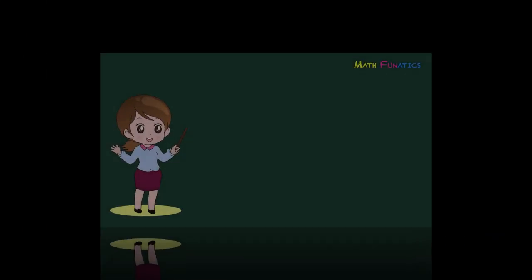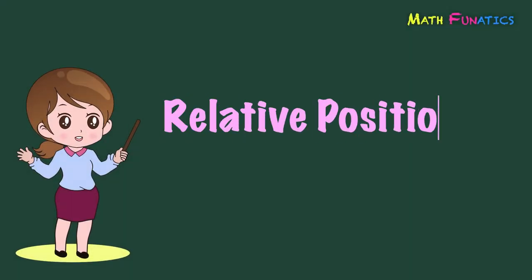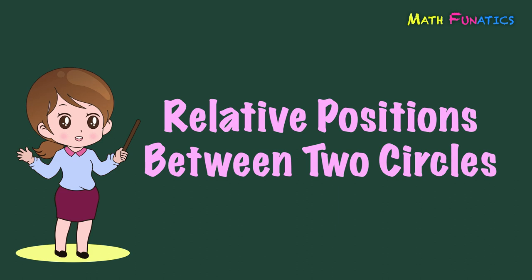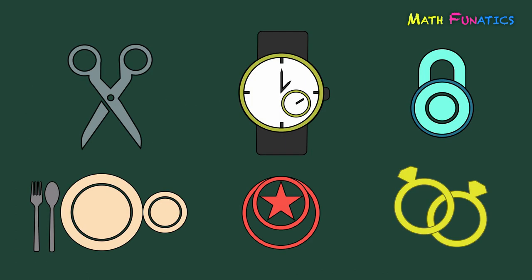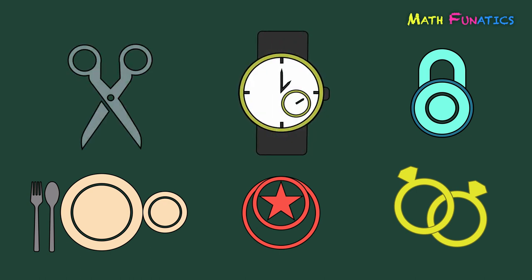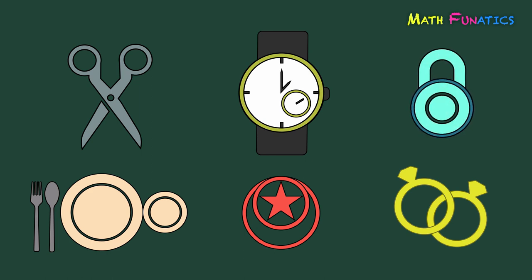This time, let's learn more about relative positions between two circles. Let's take a look at the following illustrations. We have a pair of scissors, a wrist watch, a padlock, an eating set, a lantern, and two rings.